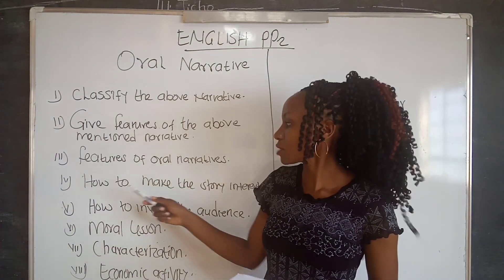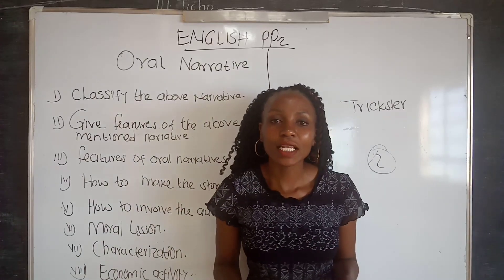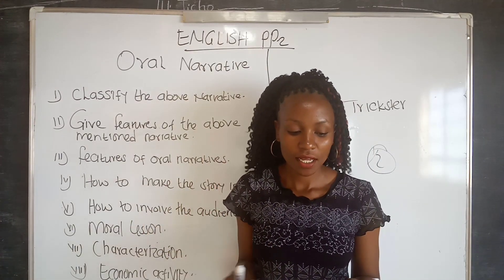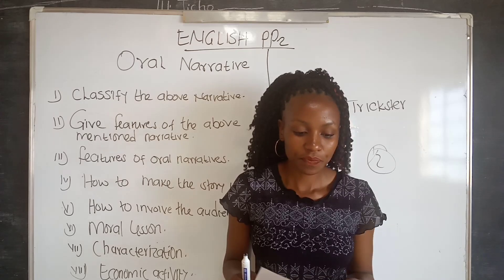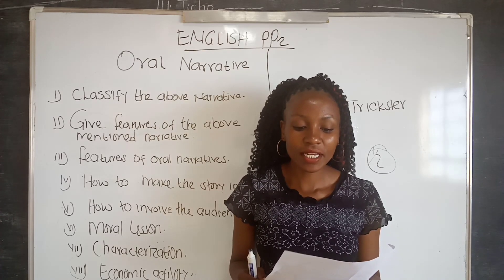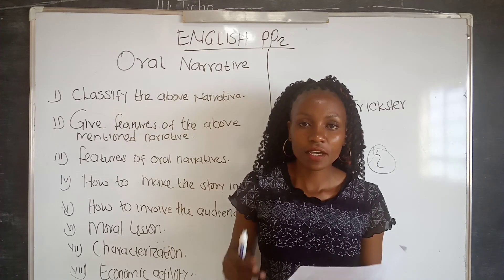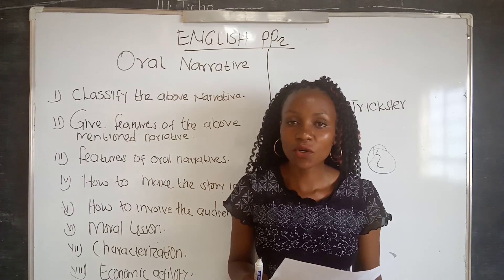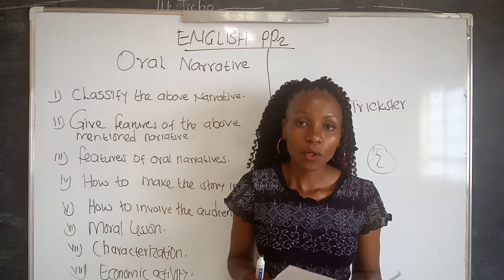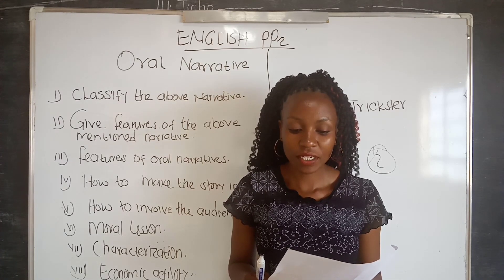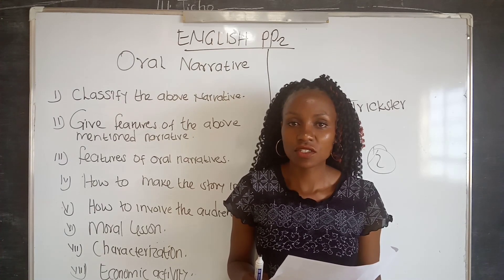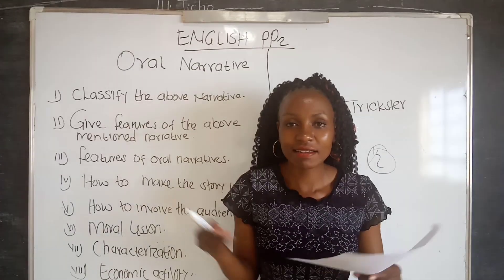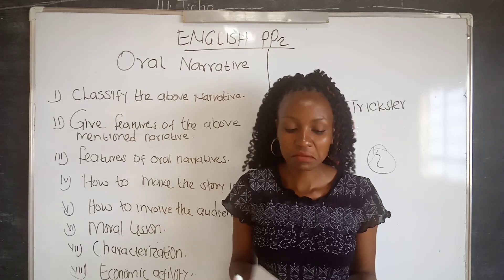Another common question is: features of oral narrative. This question can be asked in a number of ways — for example, 'identify features peculiar to oral narratives evident in the above story,' or 'how can we tell this is an oral narrative,' or 'identify the features of oral narratives used in this story.' In that case, we look at the general features of oral narratives, and there are many.